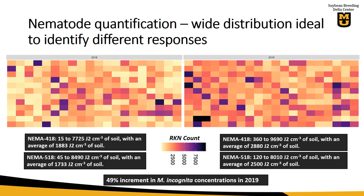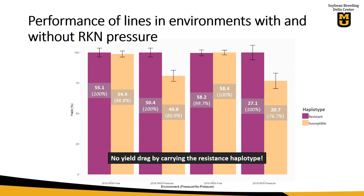In terms of yield, this is very interesting: we grew those lines in root-knot-free environments and root-knot-pressured environments. When you don't have nematode pressure, all of these lines are high yielding. You don't see a significant difference between resistant lines — these purple bars — and the susceptible lines — these yellowish bars. Not in 2018, not in 2019. They're all high-yielding lines.